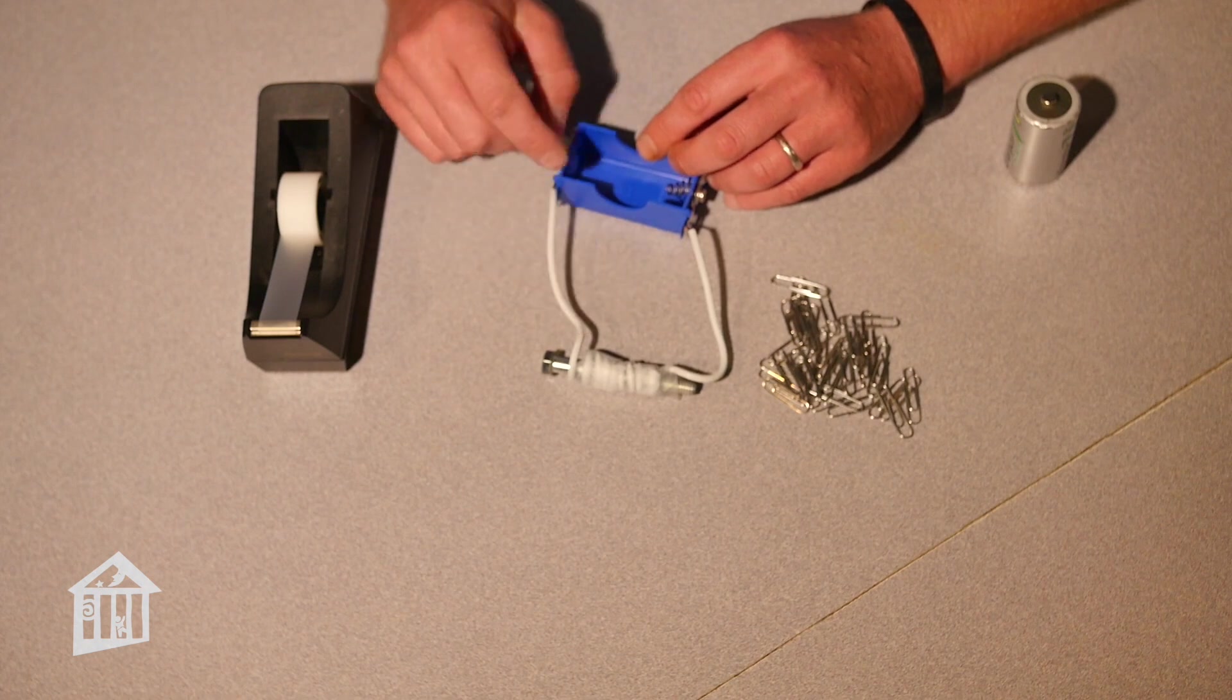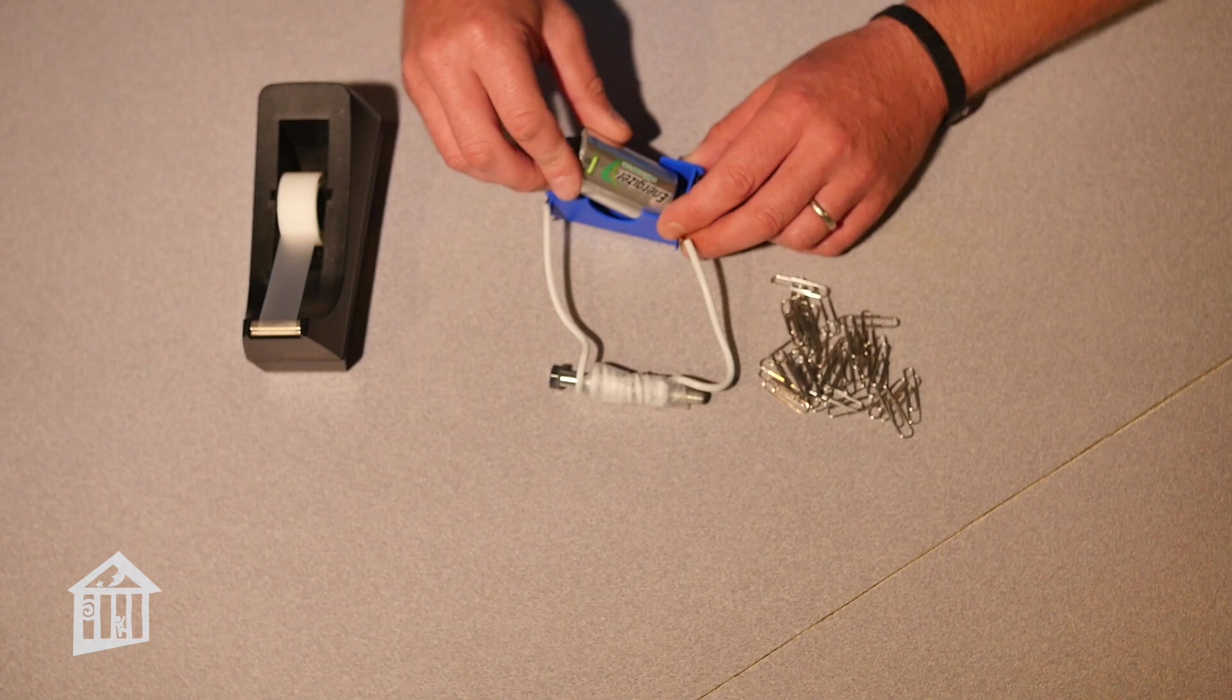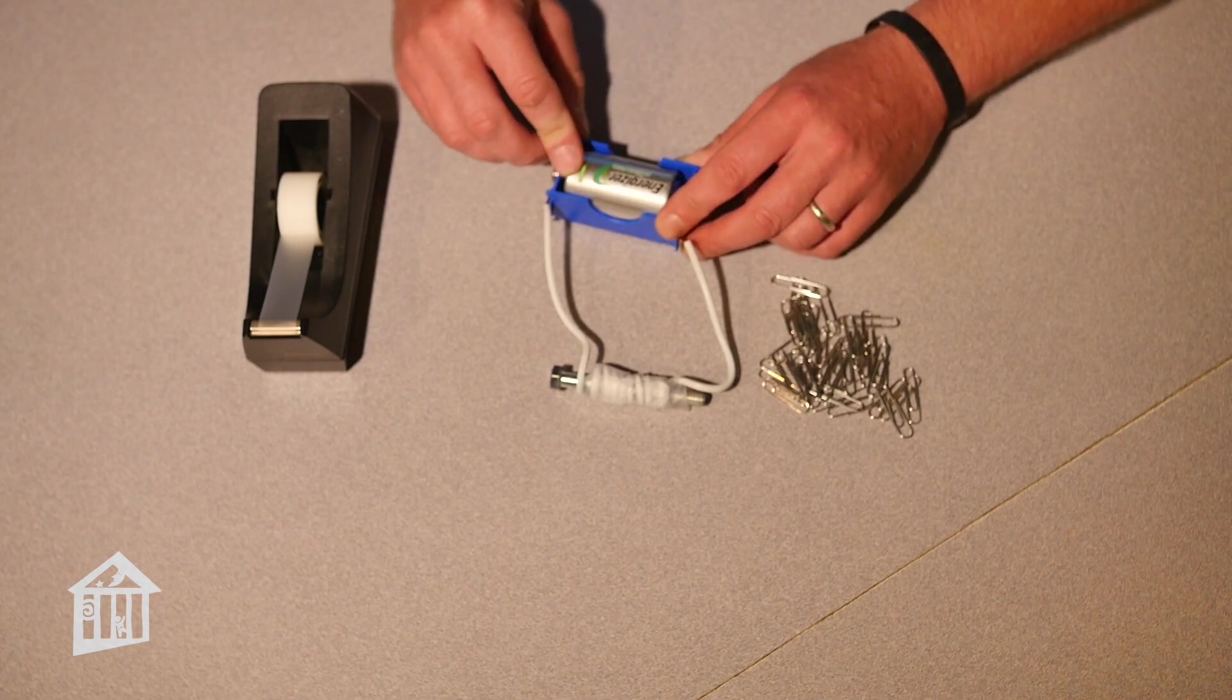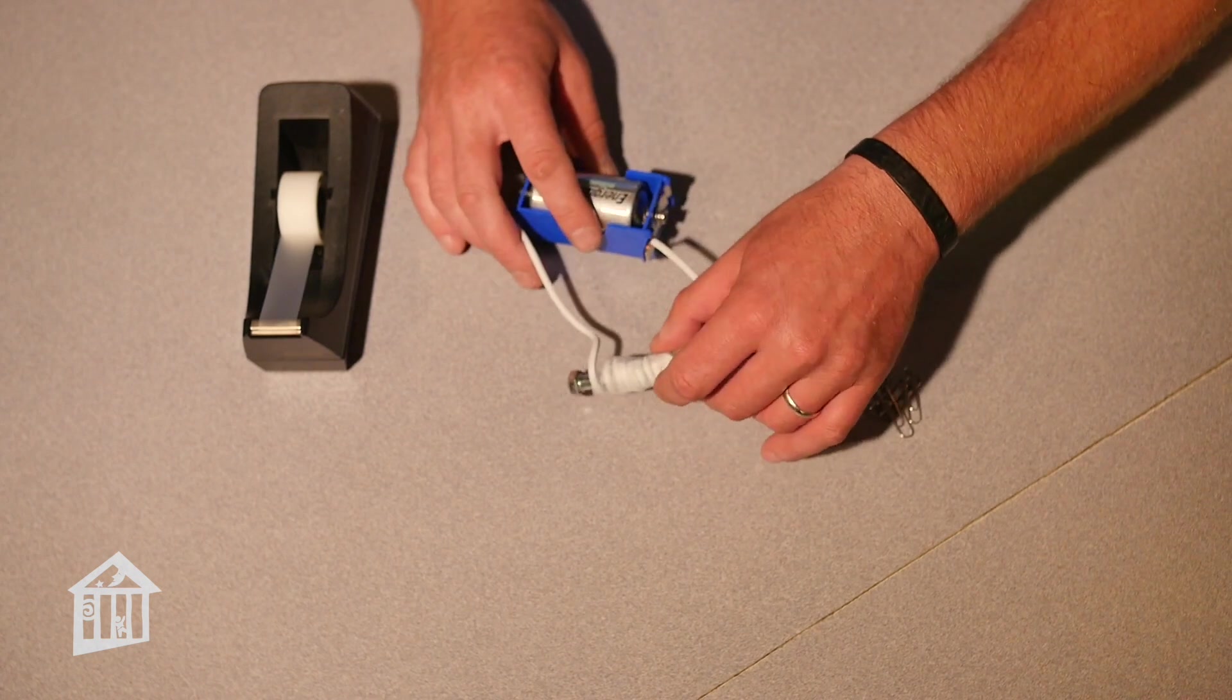Once you've connected your conductor to your D cell battery holder, the last step is to add your D cell battery. This is the power source. It'll allow the flow of electrons to go through the conductors and into the coil, which will create the magnetic field. Watch this.